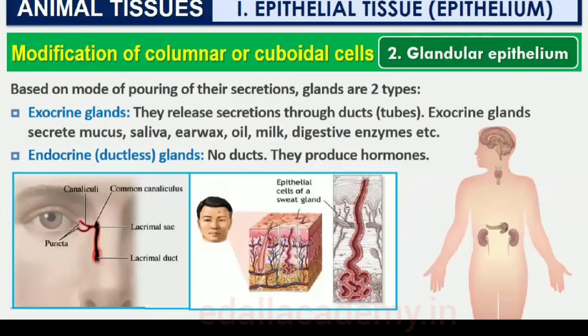Exocrine glands secrete mucus, saliva, ear wax, oil, milk, digestive enzymes and other cell products. These products are released through ducts or tubes. In contrast, endocrine glands do not have ducts. Their products called hormones are secreted directly into the fluid bathing the gland.